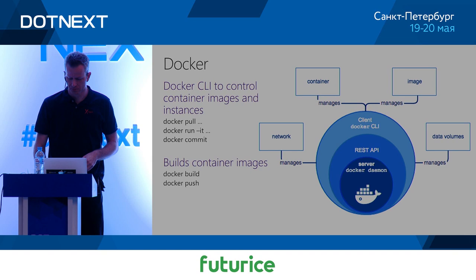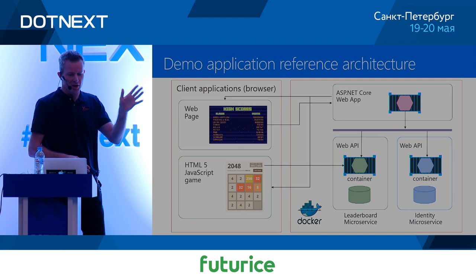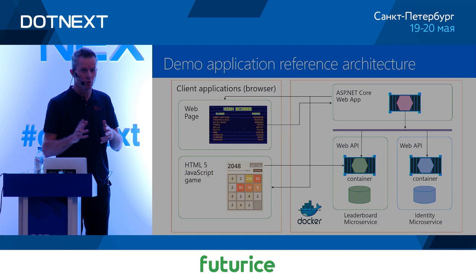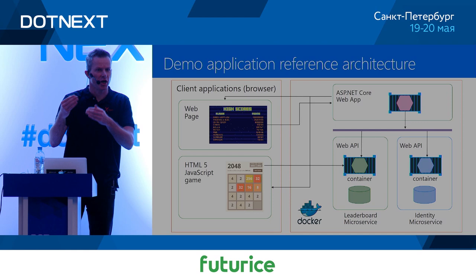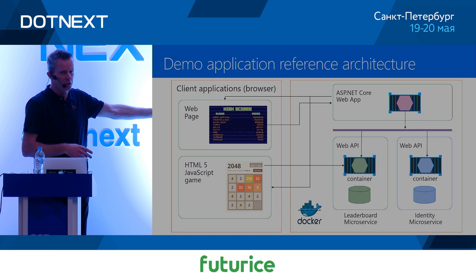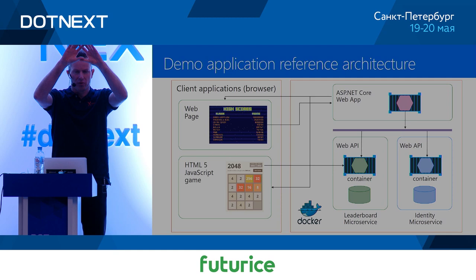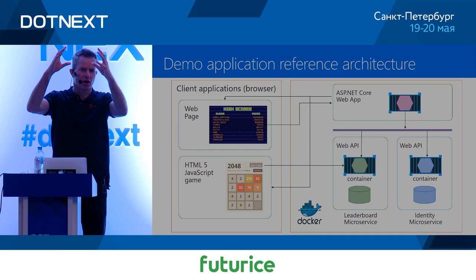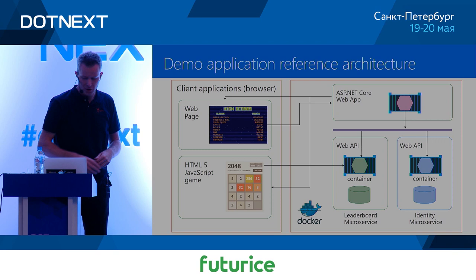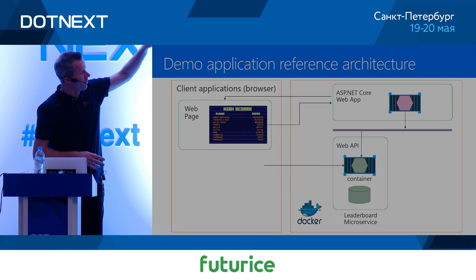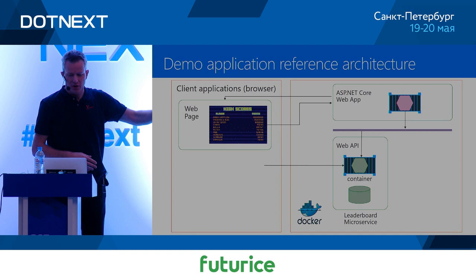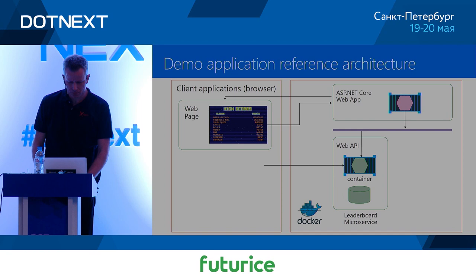I built an application about gaming because I like old video games. It's a leaderboard application that keeps high scores. A JavaScript client — or anything that can call a web API — sends high scores to a leaderboard Web API. There's also an MVC application that consumes the API, finds the highest scores for each game, and shows them in a high score table. We'll focus on the web application, the Web API with its database, and calling the API to see the scores.